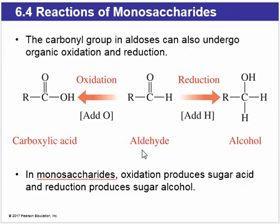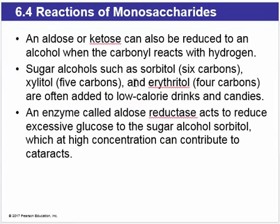If we add a hydrogen to an aldehyde, we will reduce it to an alcohol. And when an aldose or ketose is reduced to an alcohol, the resulting alcohol is known as a sugar alcohol.